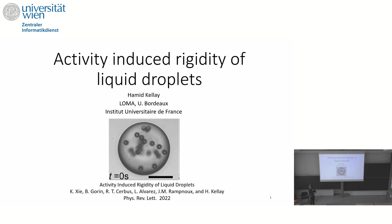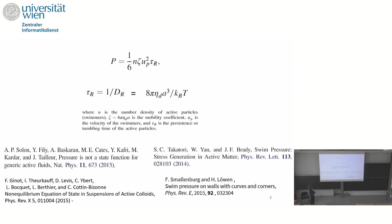We make the Janus particles ourselves because we need them with controlled properties and different sizes, and we deform droplets in a simple hydrodynamic setup that we characterize. In a sense, we want to measure some sort of mechanical pressure using this droplet deformation.